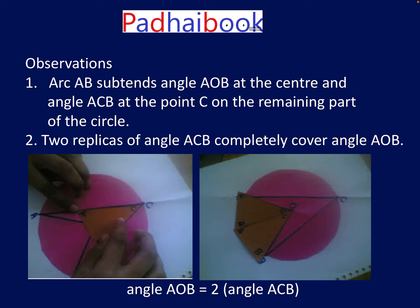Here is the observation: the arc AB subtends angle AOB at the center and the same arc subtends angle ACB at point C on the remaining part of the circle. The two replicas of angle ACB completely cover angle AOB, as you can see in the figure. This verifies that angle AOB is twice angle ACB.